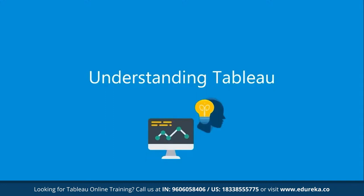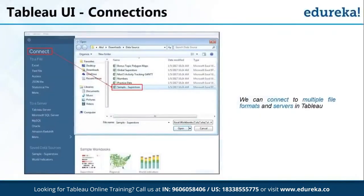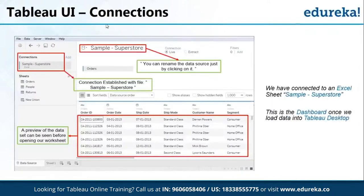Now let us understand how to connect to different data sources in Tableau. When you open Tableau, the first thing you'll see is the connect option. You can connect to any files — Excel files, text files, JSON files, or any kind of server. If you already have a data set in your system, you can browse to the file location and open it. In Tableau, there is a sample data set called the Superstore. When you load a data set, you'll see a preview of all the different fields and attributes — things like order ID, order date, ship date, ship mode, and customer name — all viewable even before you open your worksheet.